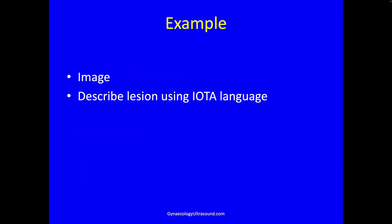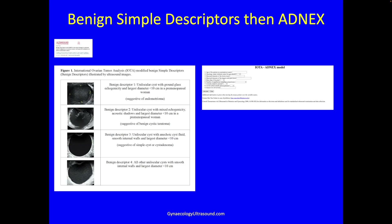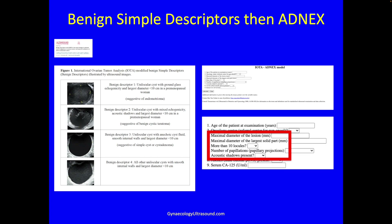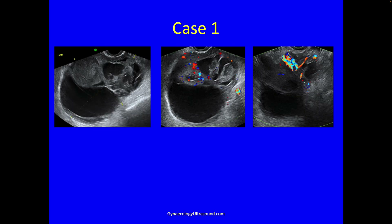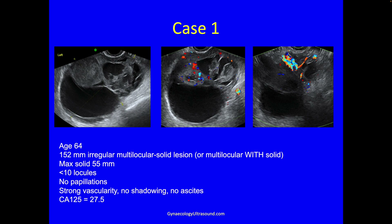Using this example: we describe it using IOTA language, then use benign simple descriptors, and if it doesn't fit any of those, use the ADNEX score. The patient was 64 and presented with worrying symptoms and a normal CA125. The mass was 152 millimeters, irregular, multilocular solid — more than one locule comprising more than 20% of the overall mass. The maximum solid component was 55 millimeters, fewer than 10 locules, no papillations.